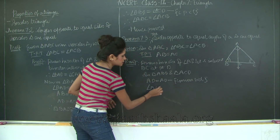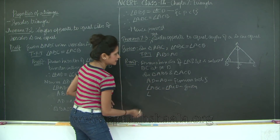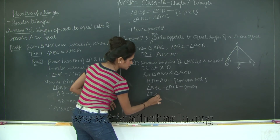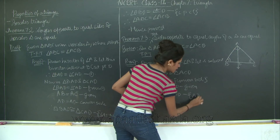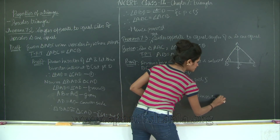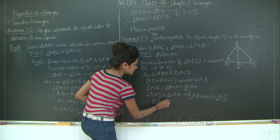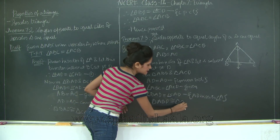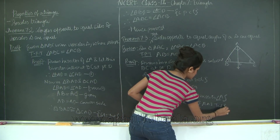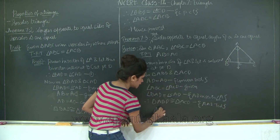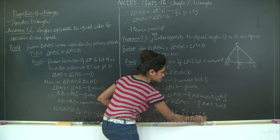In triangle ABD and triangle ACD: AD is equal to AD, the common side. Angle ABC is equal to angle ACD, which is given. Angle BAD is equal to angle CAD because AD bisects angle A. Therefore triangle ABD is congruent to triangle ACD by the AAS test. Therefore AB is equal to AC by corresponding parts of congruent triangles. Hence proved.